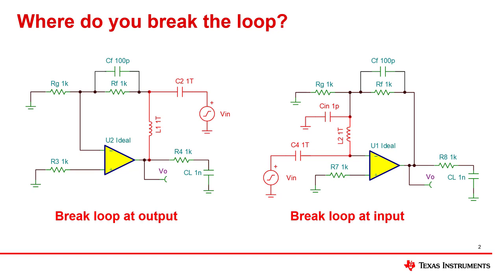Breaking the loop on the output can be done by disconnecting the feedback and inserting a 1 tera henry inductor and 1 tera farad capacitor to couple the test signal. The test circuit is shown in red in this example.